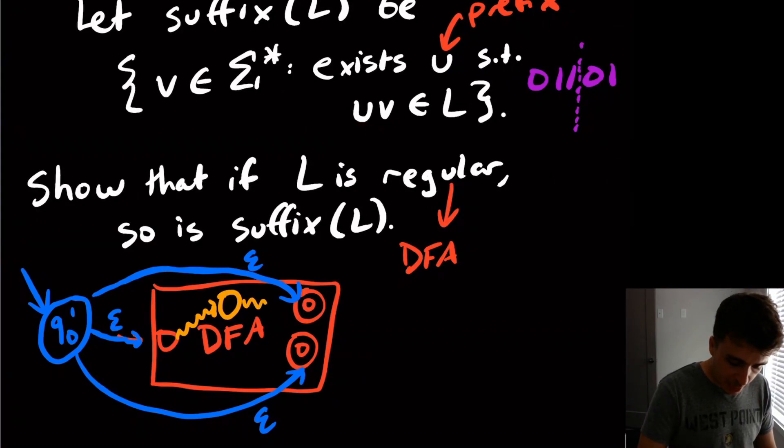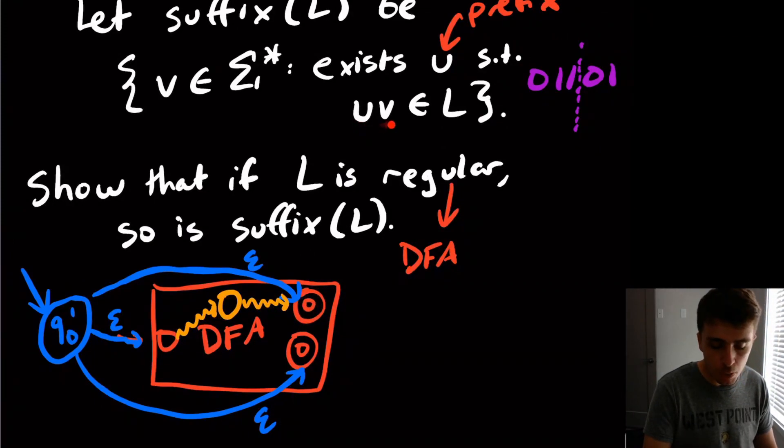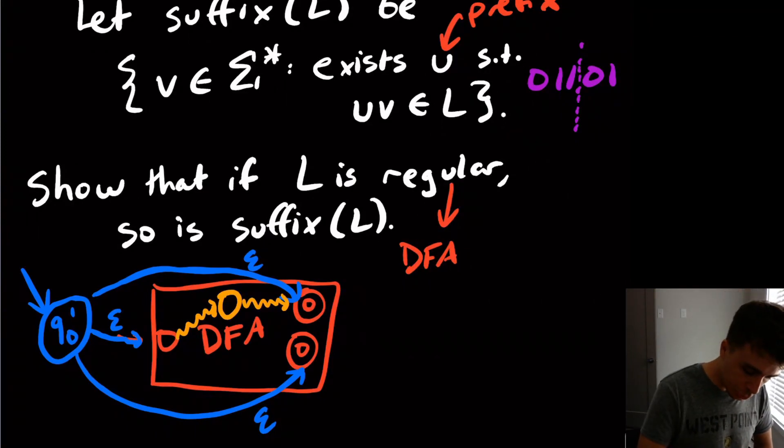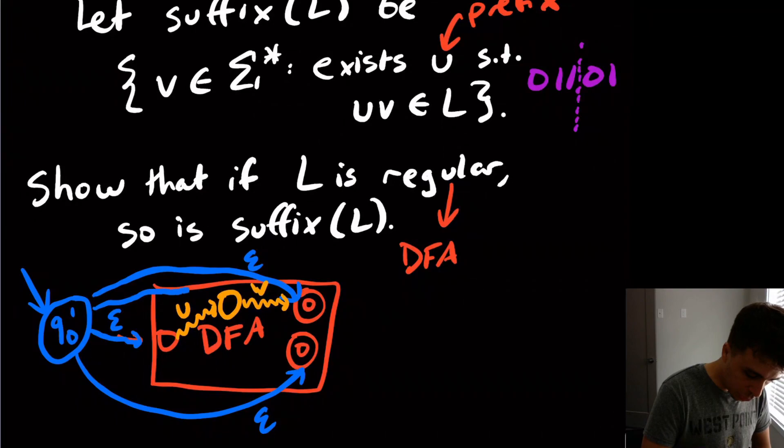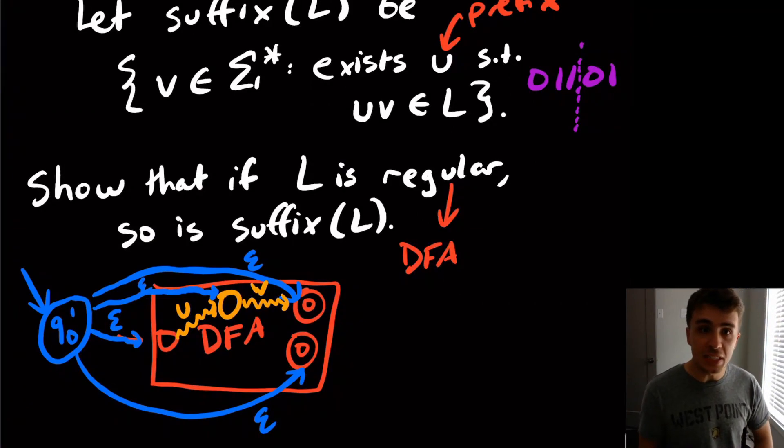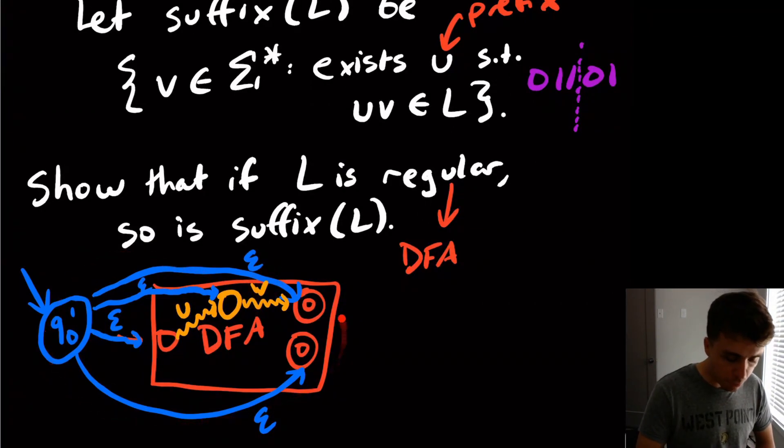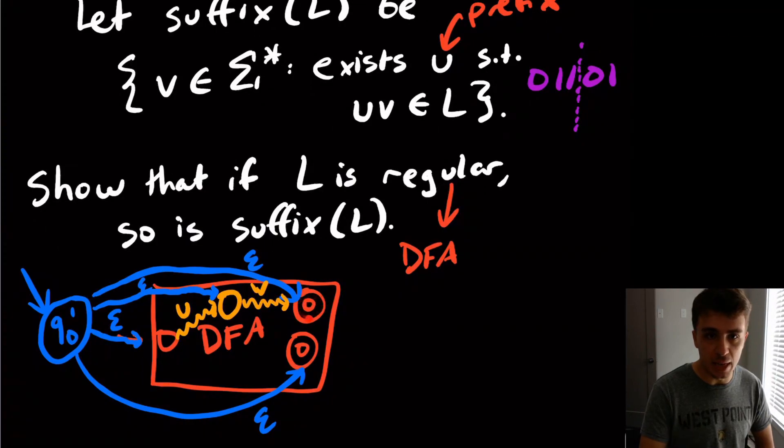Then there must be some set of transitions from here that goes to some final state because we're assuming we're dealing with a string u v that is in L. So that means it lands in a final state. And let's call these two parts u and v. Well, by our construction, we have an epsilon transition from this brand new start state into this state right here. Well, this allows us to read the v part in the modified machine, because what we can do is just take this epsilon transition to here, and then read the v part to the final state here.